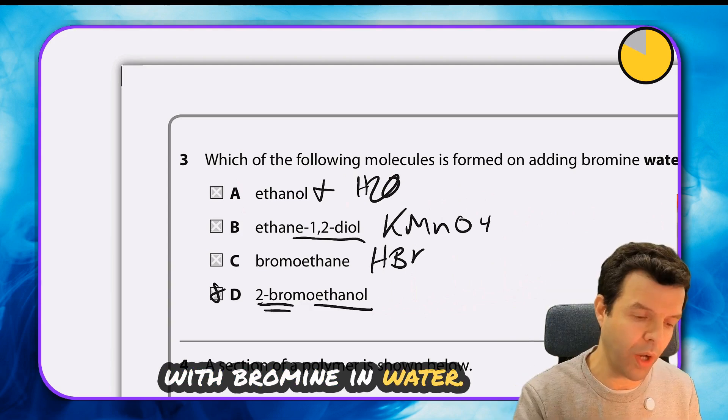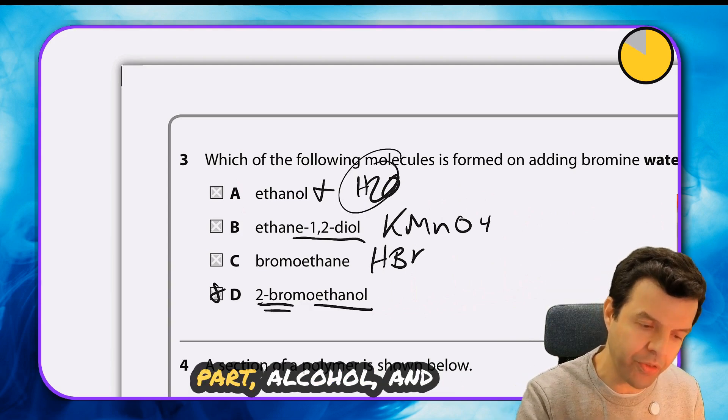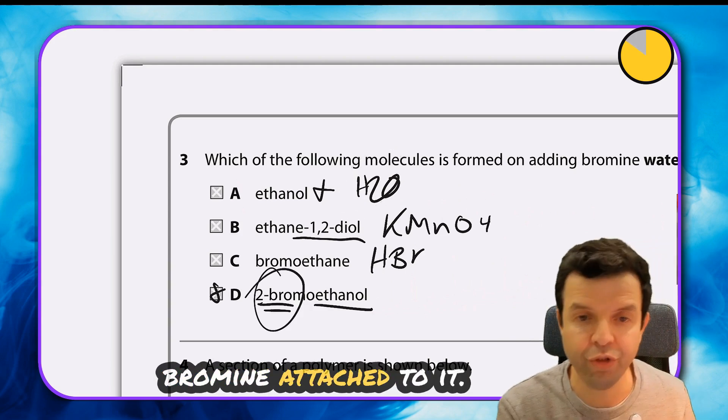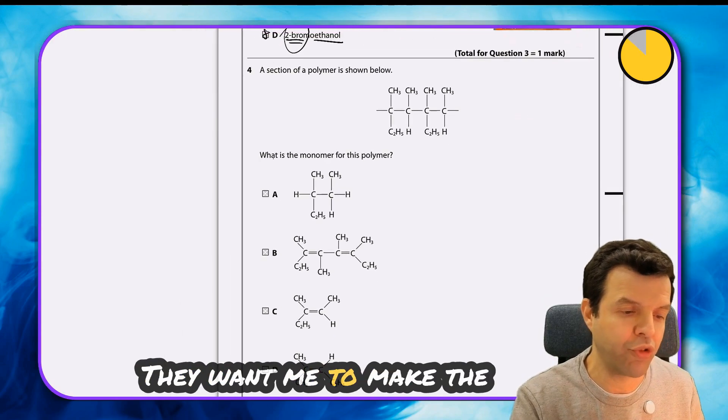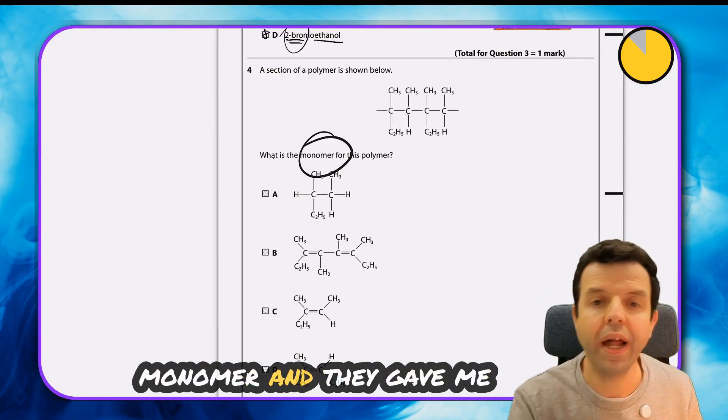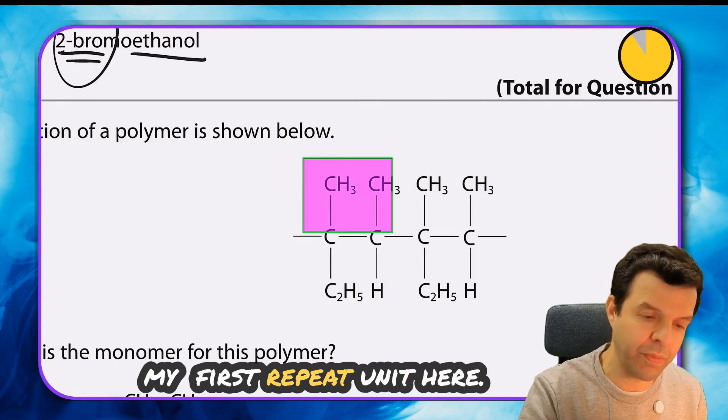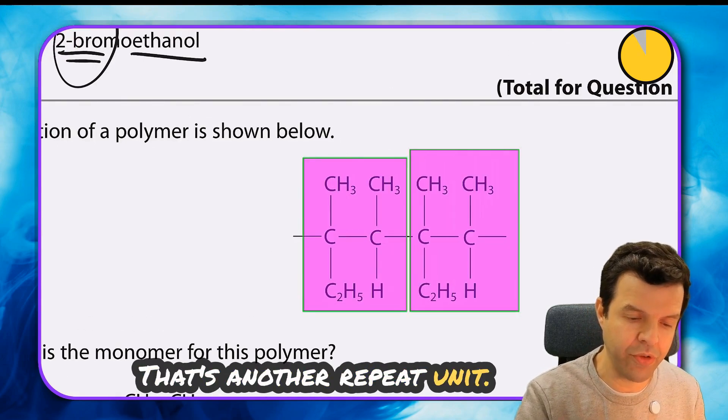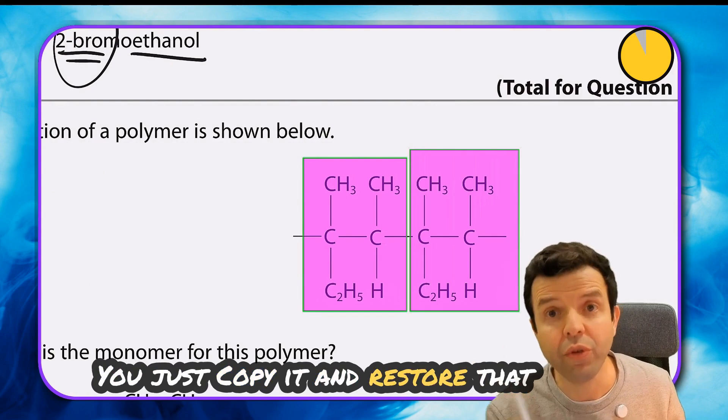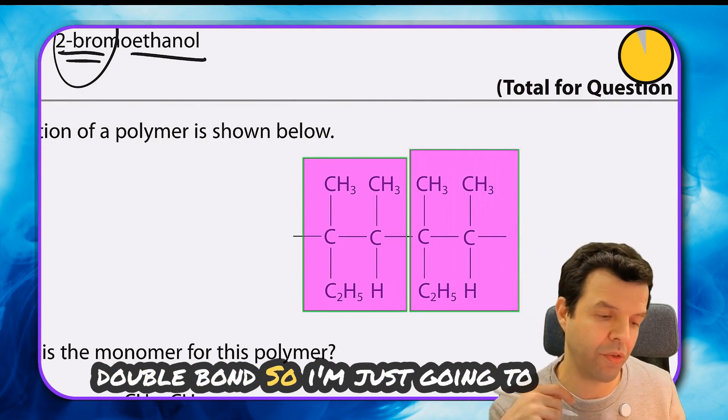Now for this one, they want me to make the monomer and they gave me two repeat units. That's my first repeat unit, that's another repeat unit. You just copy it and restore that double bond. I'm going to copy one of those repeat units and stick the double bond in the middle.